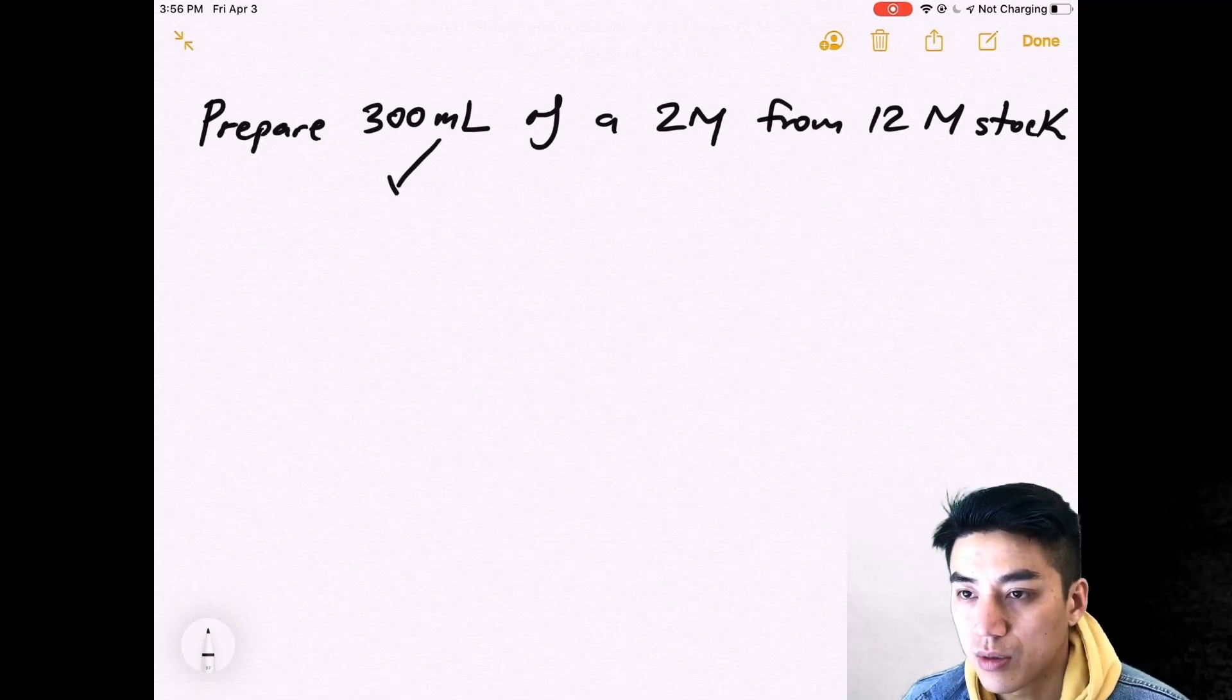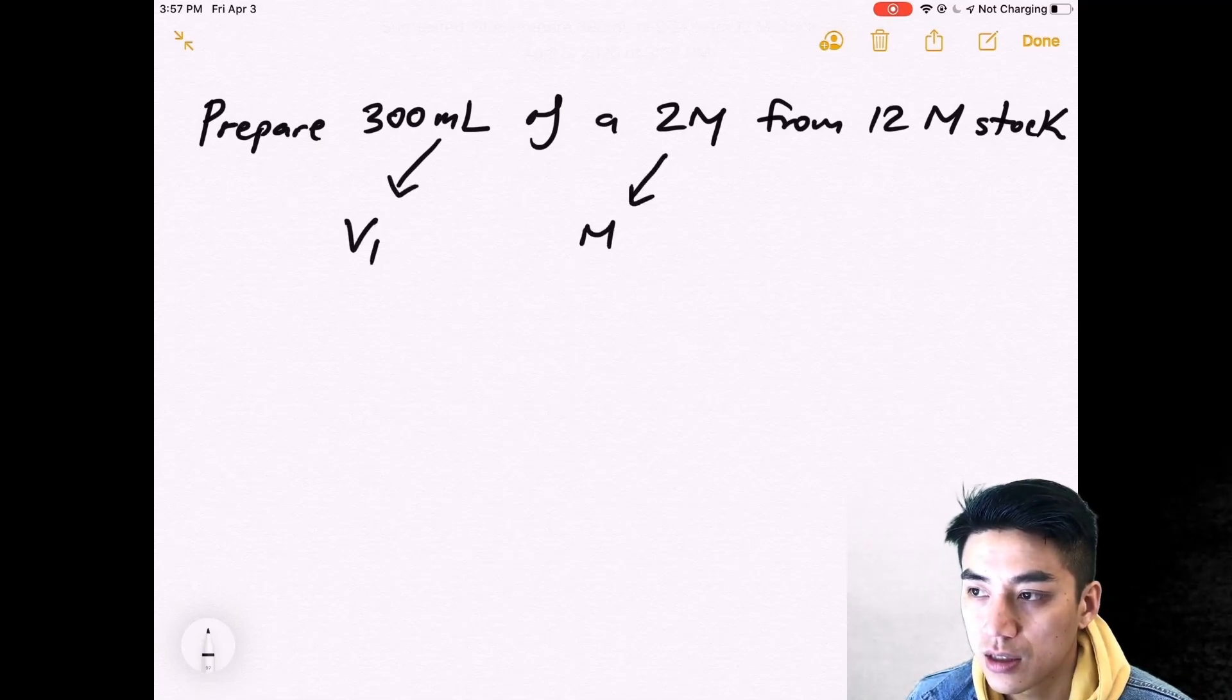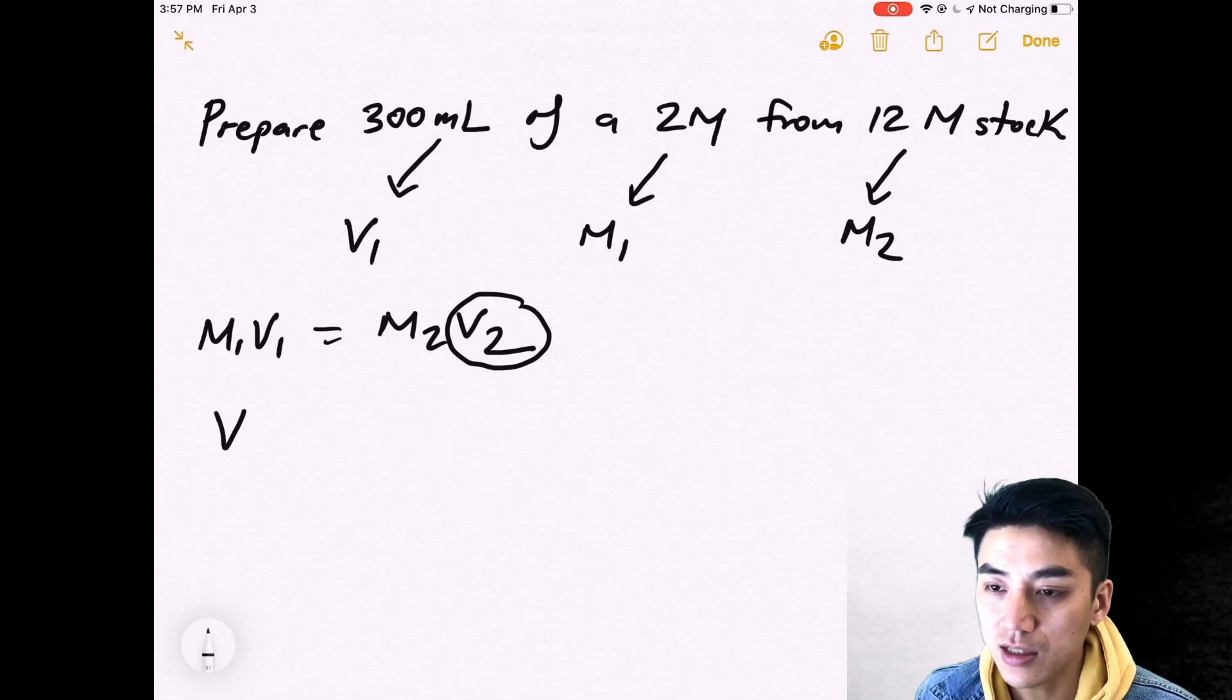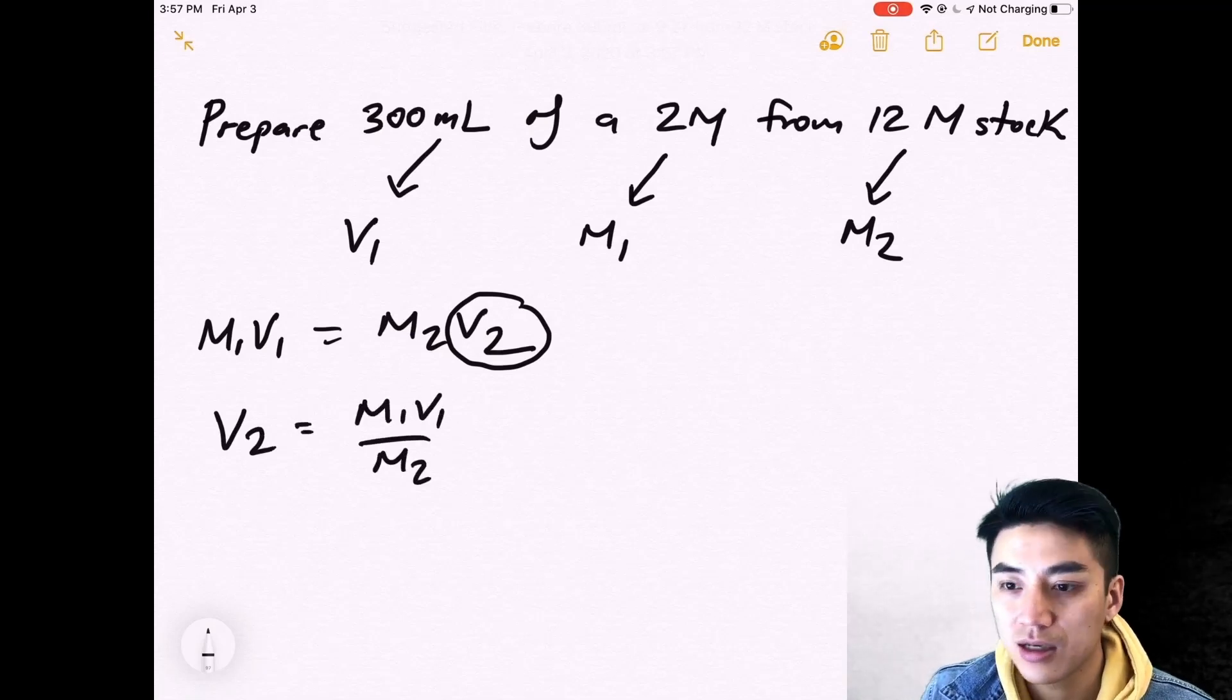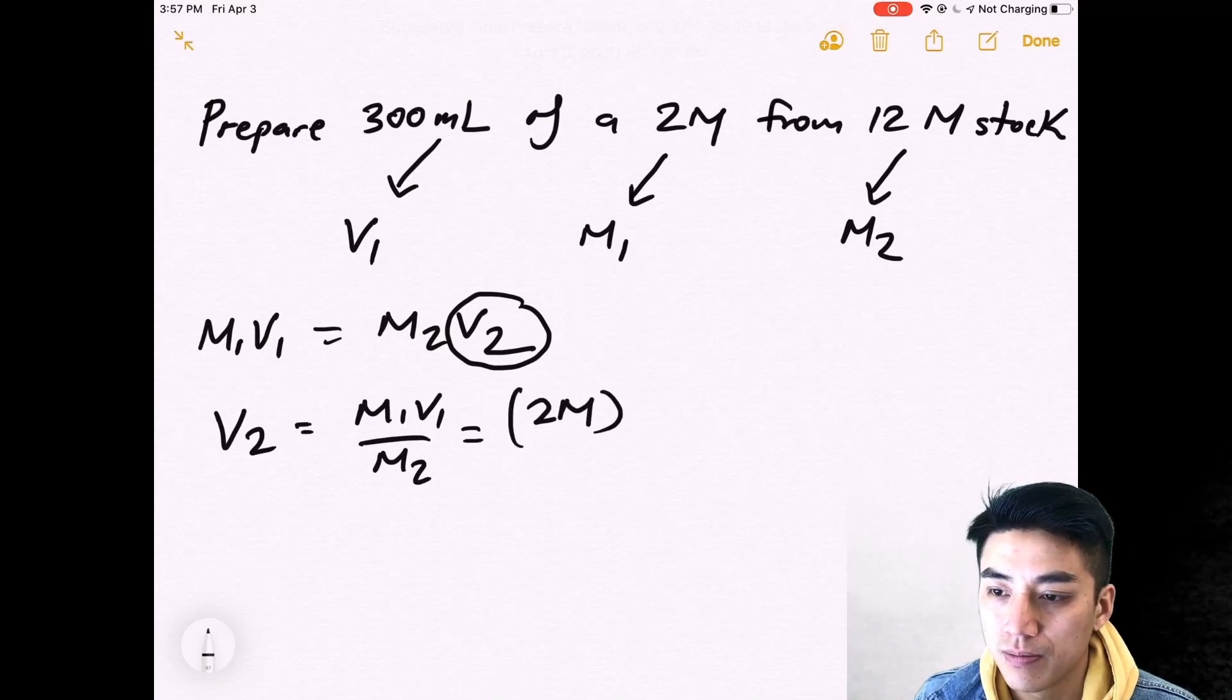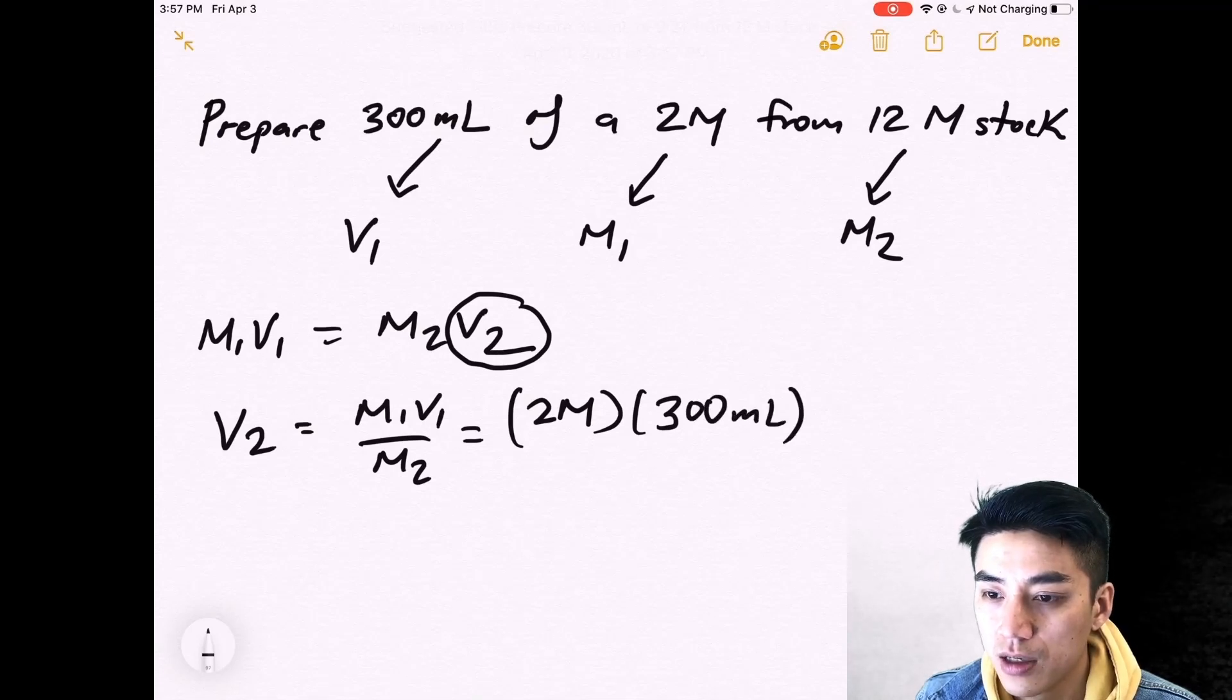Here's the problem. Prepare 300 mils of a 2 molar from 12 molar stock. Okay, so I've identified my variables, what was given. And it looks like I need to solve for V2 again. And V2, remember, represents the amount of stock that you have to measure out. Solve for V2. Plug in M1. Plug in V1. Plug in your M2.